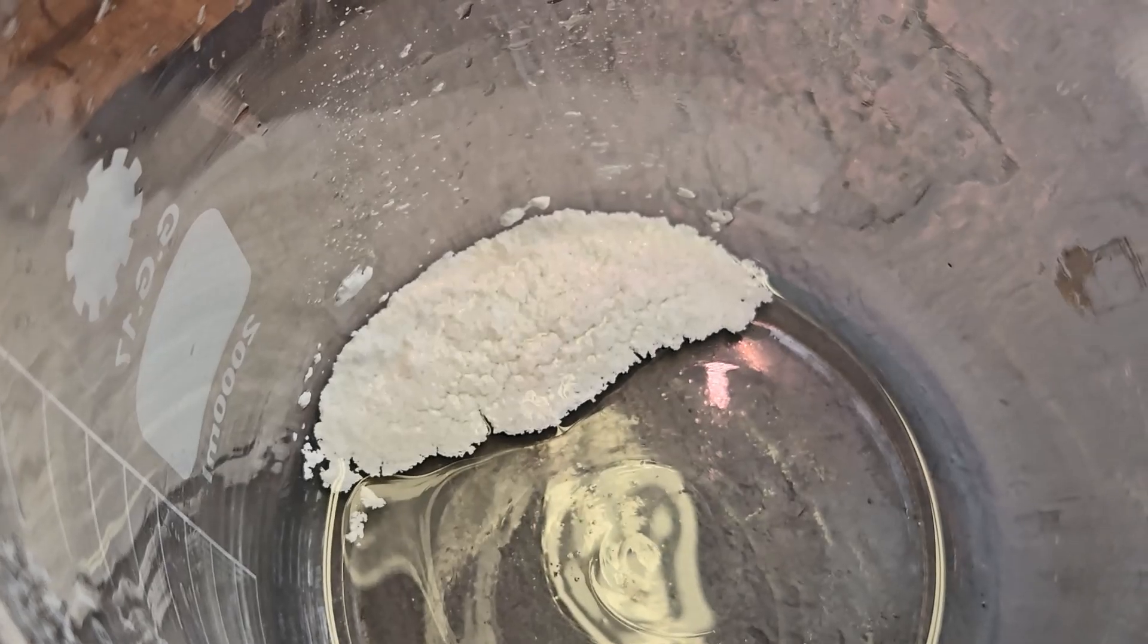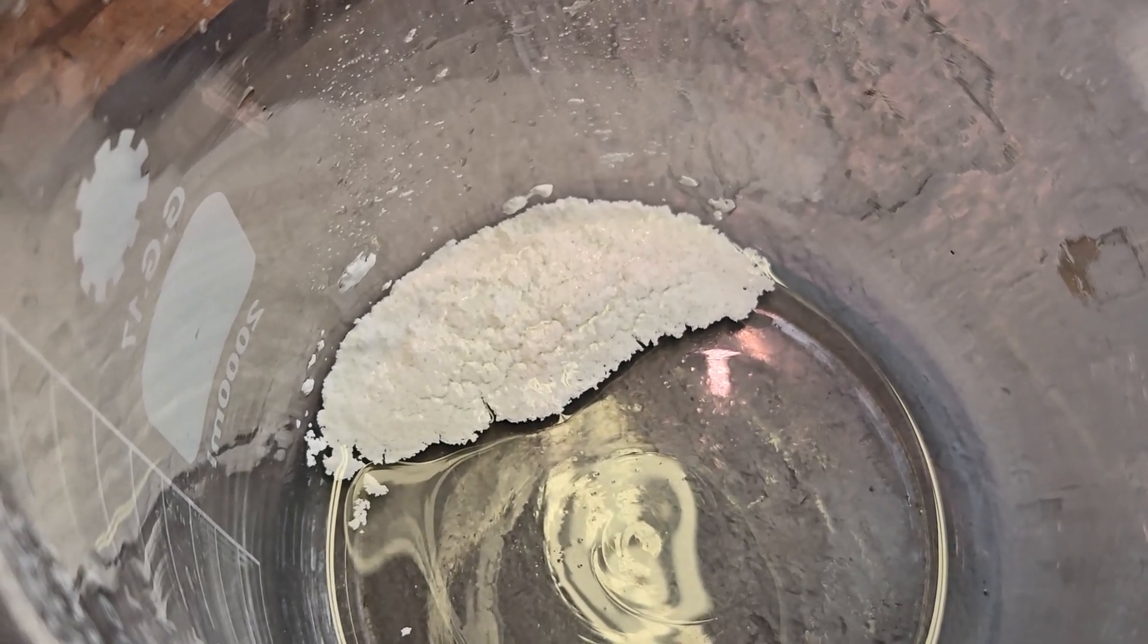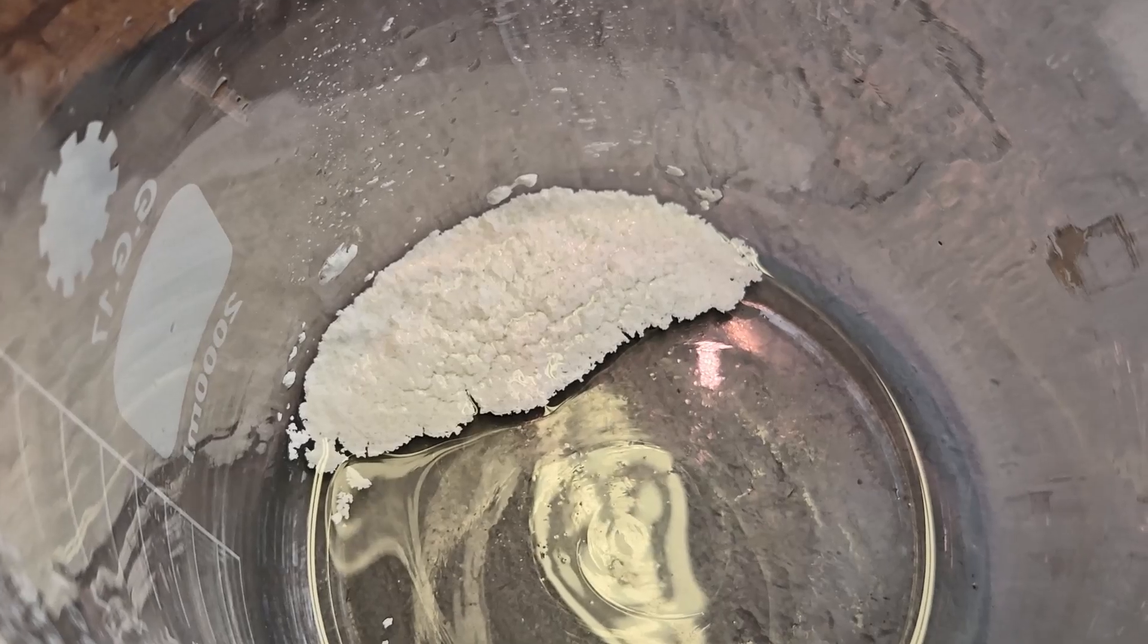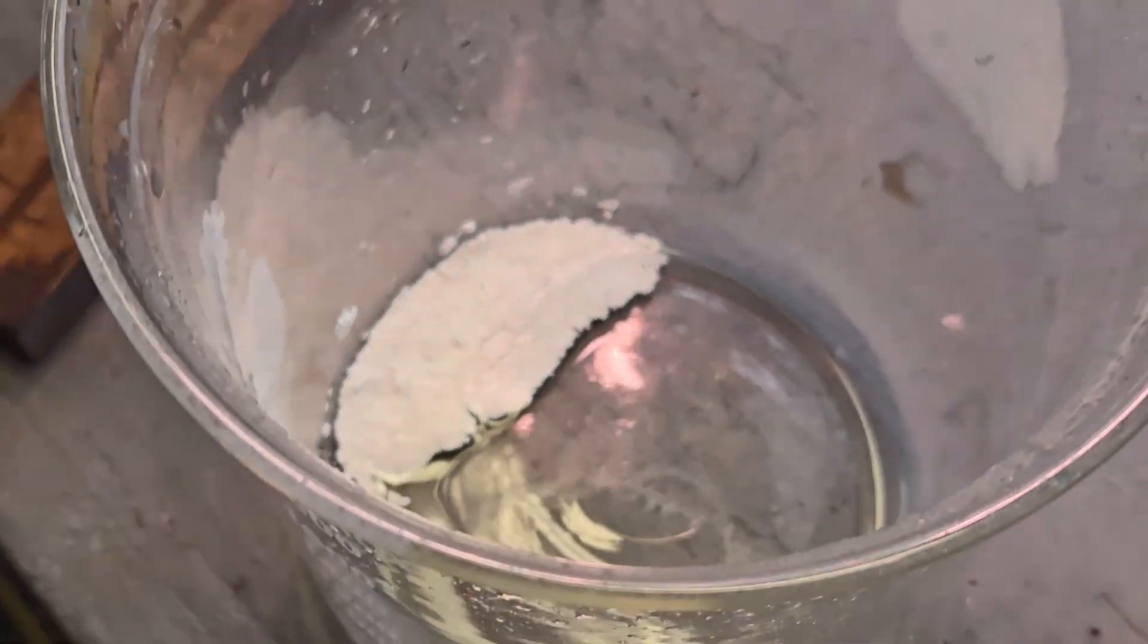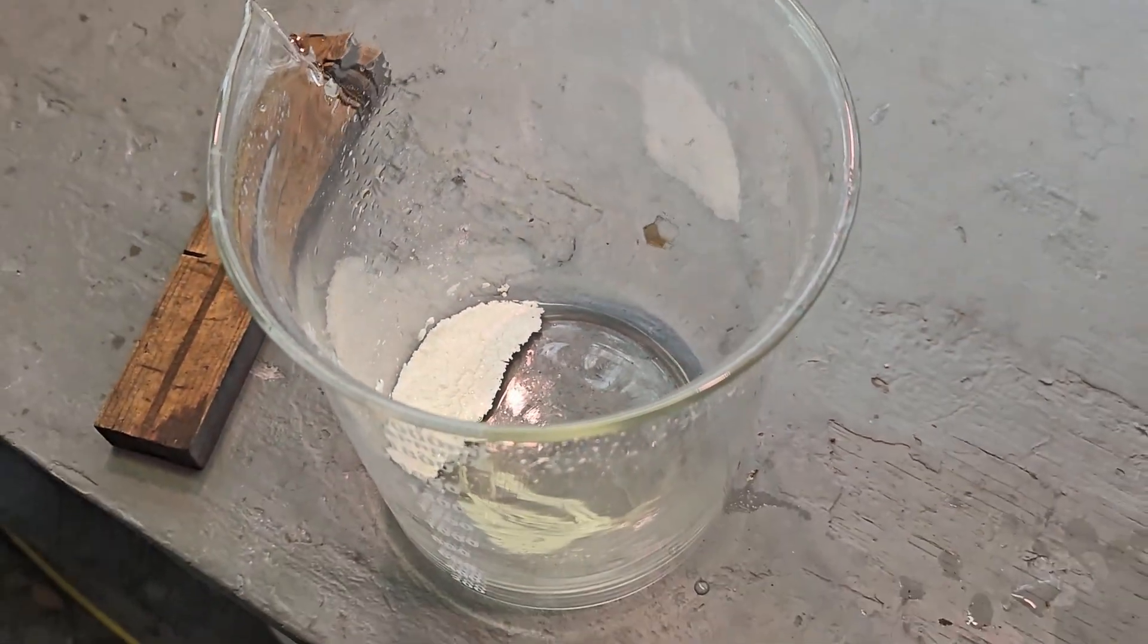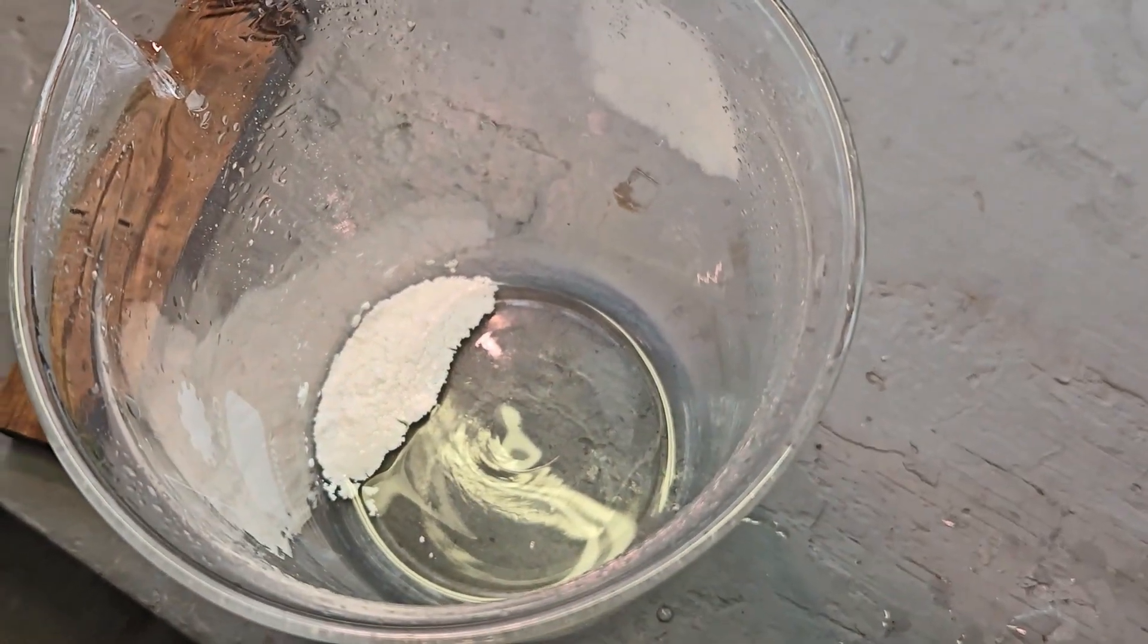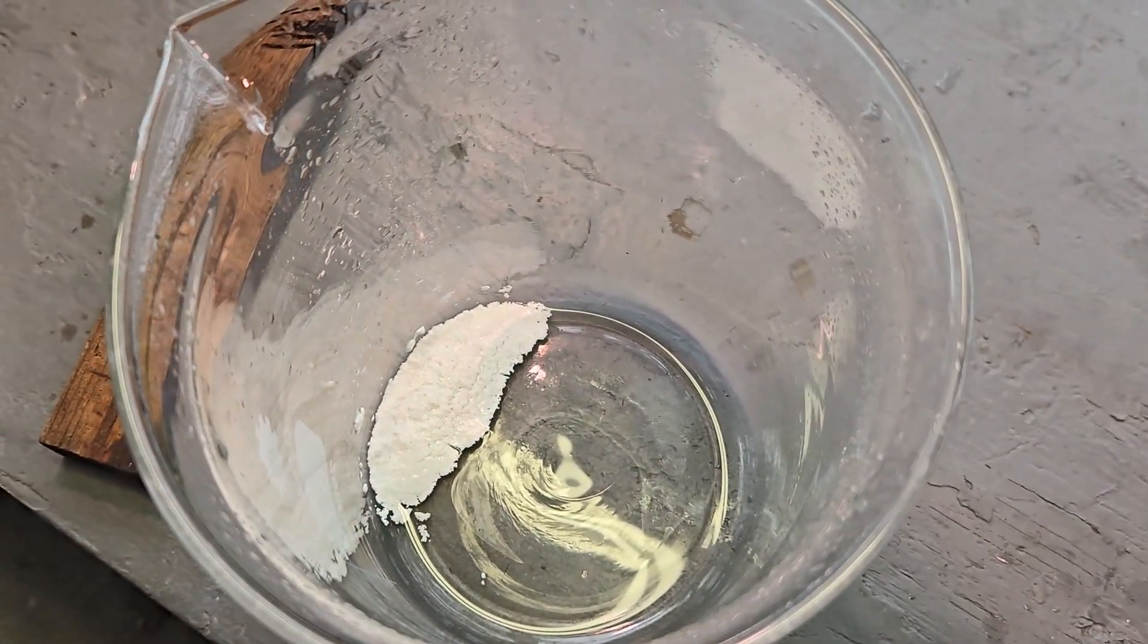So I'm going to transfer this to a smaller beaker and we'll work on it in the fume hood. So let me meet you over at the fume hood after I get this transferred, because there's really not that much silver chloride here and I don't want to work out of this big beaker.